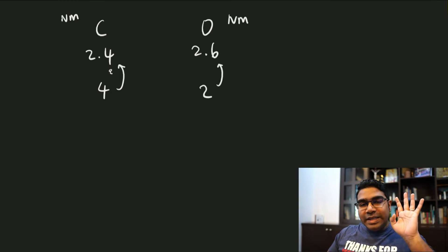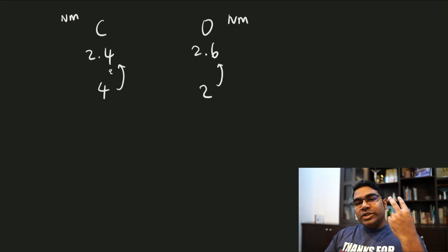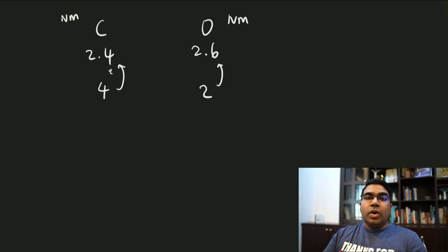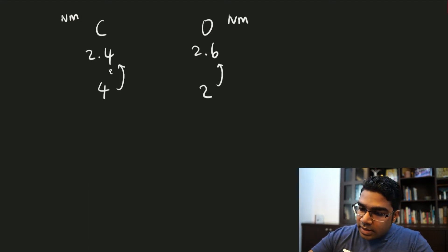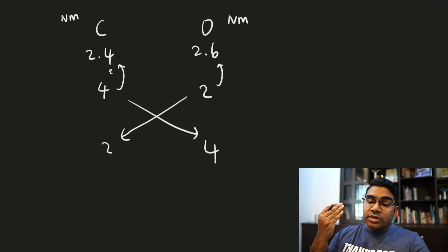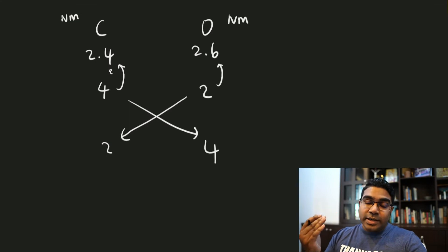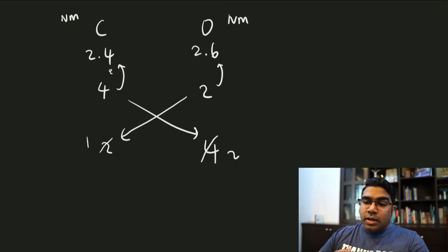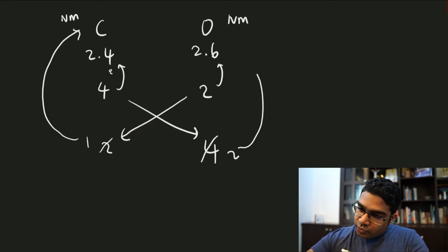For example, carbon needs 4 electrons, therefore it will also contribute 4 electrons to covalent bonds. Oxygen needs 2 electrons, so oxygen is going to contribute 2 to the covalent bond. What we do next is similar to when we devise our ionic formula — we cross these numbers. In ionic compounds we cross the charges, but here we cross the amount of electrons needed. After simplifying, we get a 1 to 2 ratio: 1 carbon atom and 2 oxygen atoms in the compound.